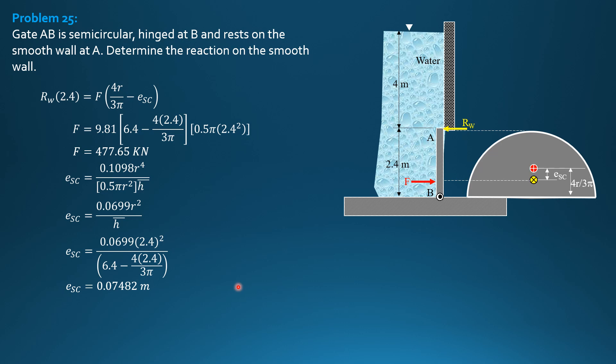So, everything is computed. Substitute in this working equation. Rw times 2.4 equals 477.65 quantity 4 times 2.4 over 3 pi minus 0.07482. So, reaction on the wall can now be computed. 187.8 kilonewtons.